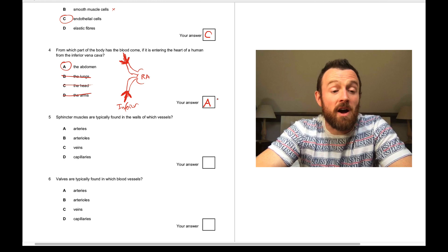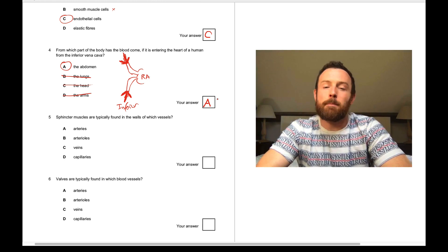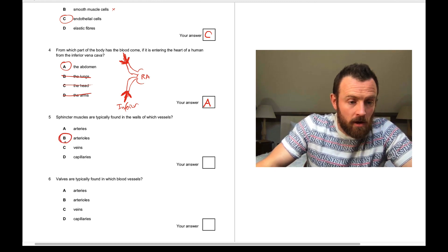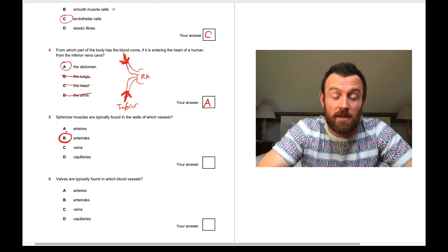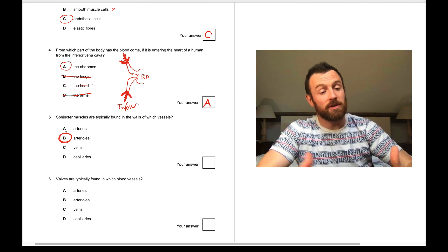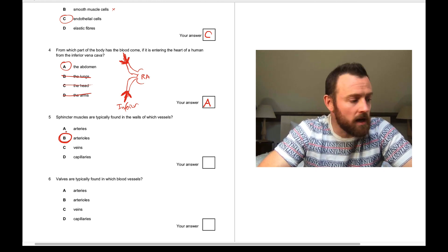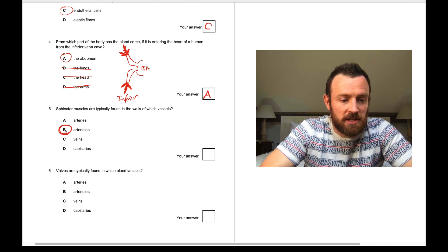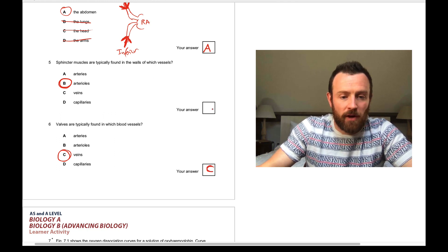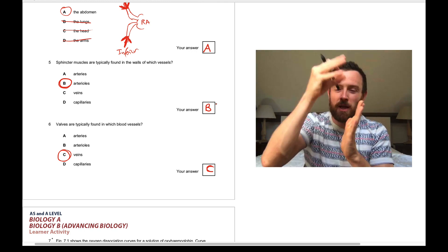Question five, sphincter muscles are typically found in the walls of which vessels? So a sphincter is any ring of muscle that can constrict. They're found in arterioles and also in other places, like in the digestive system. Question six, valves are typically found in veins. So they allow only one way flow. Remember the mind map, we had a picture of the muscle squishing the vein and the blood going one way.